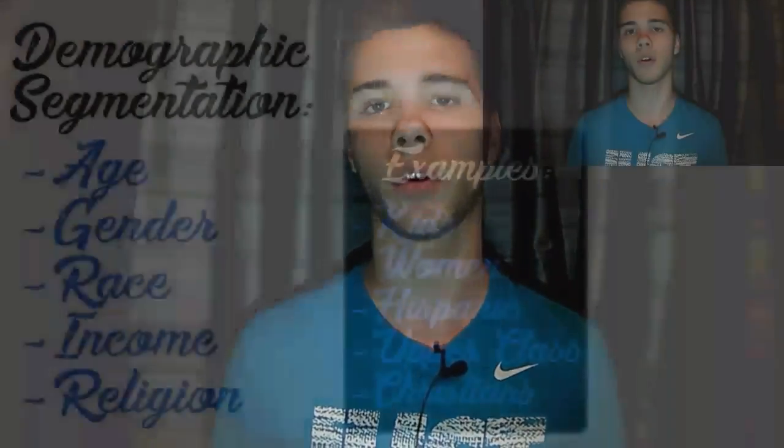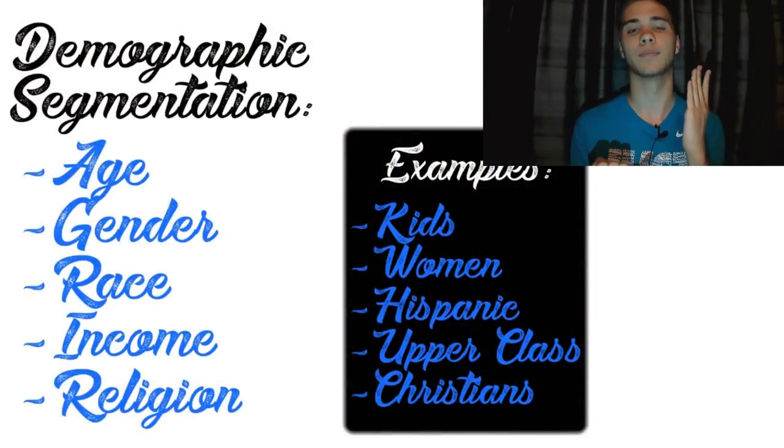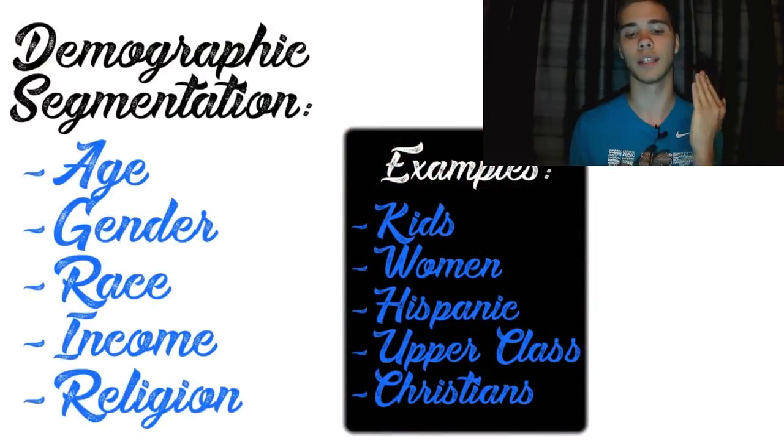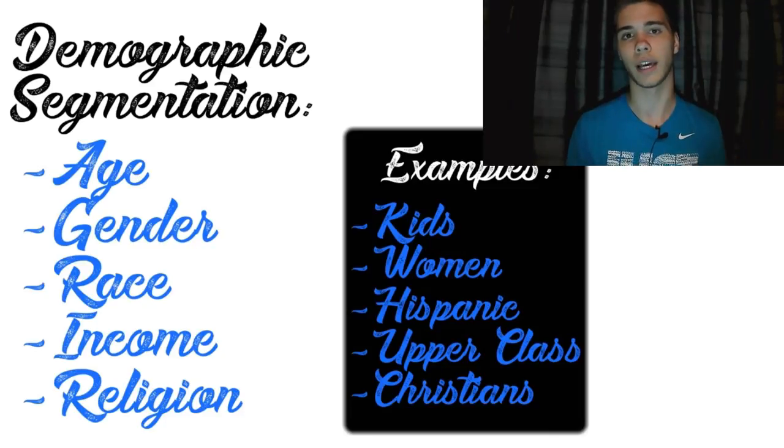Now there are four types of market segmentation: demographic, geographic, psychographic, and behavioral. The most simplest one is probably demographic. Demographic includes age, race, gender, religion, income — all of that.